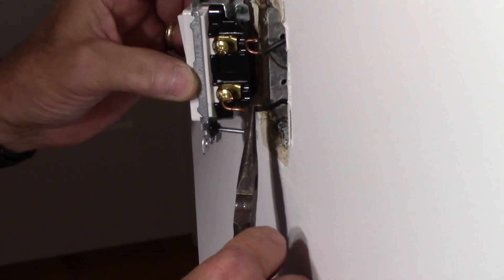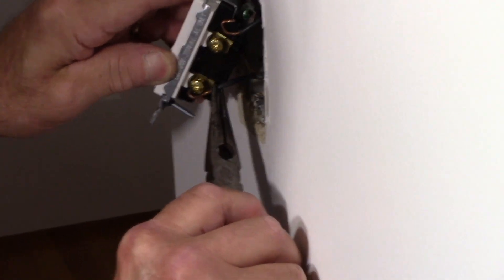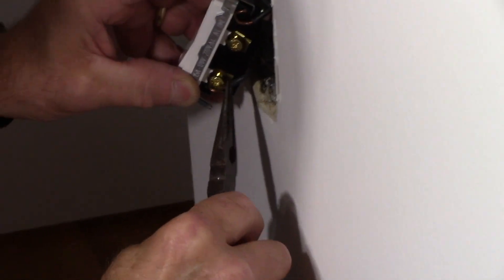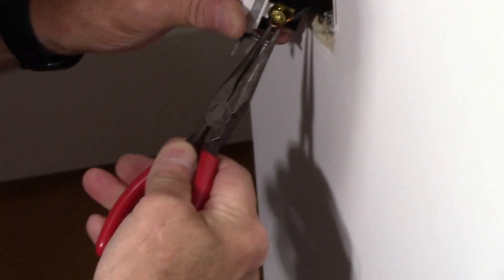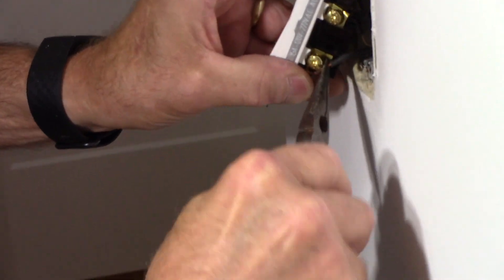We're going to take this now. We're going to take our switch, take our wires and put them back on as we took them off before. We're going to turn it so that the loop of the wire itself tightens up as we rotate the screw in a clockwise position like that.